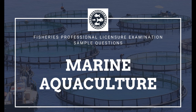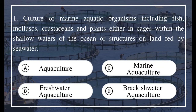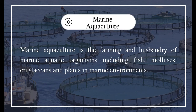Good day. These are the sample questions for the fifth topic under aquaculture. Question 1: Marine aquaculture — the culture of marine aquatic organisms including fish, mollusks, crustaceans, and plants, either in cages within the shallow waters of the ocean or in structures on land fed by seawater. Options: a) Aquaculture, b) Freshwater aquaculture, c) Marine aquaculture, d) Brackish water aquaculture. The answer is C, marine aquaculture. Marine aquaculture is the farming and husbandry of marine aquatic organisms including fish, mollusks, crustaceans, and plants in marine environments.